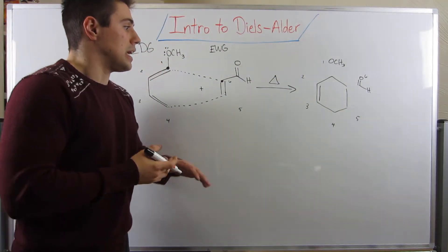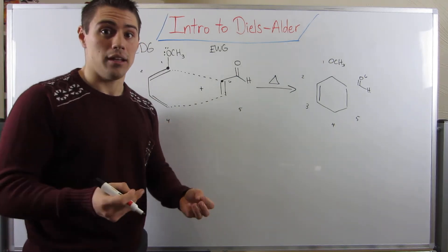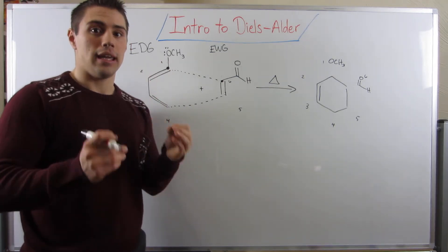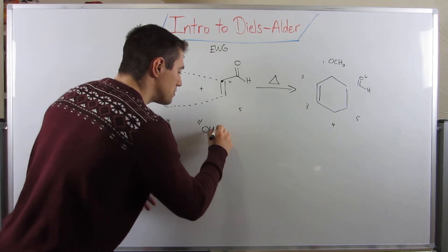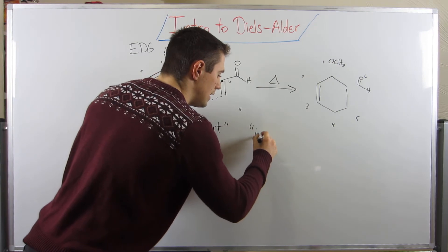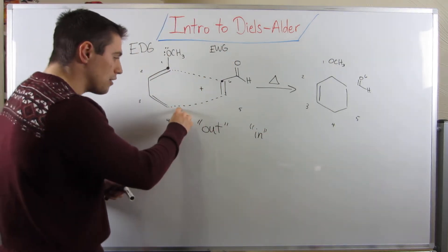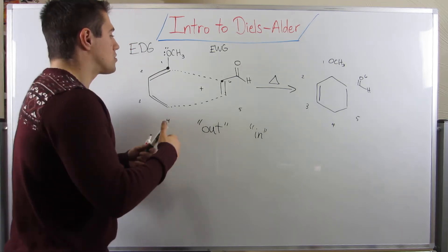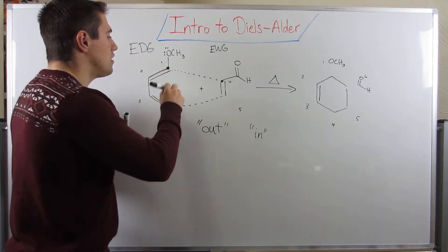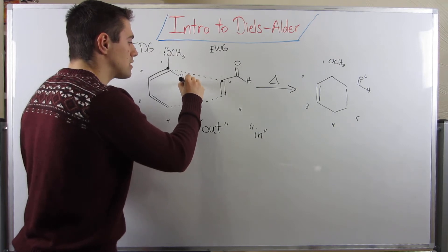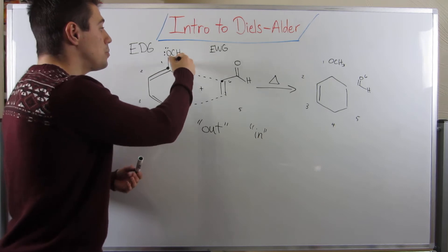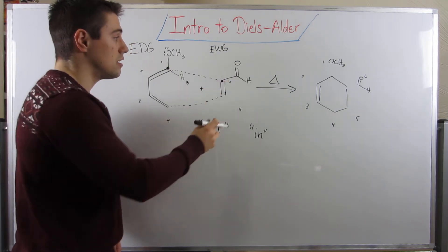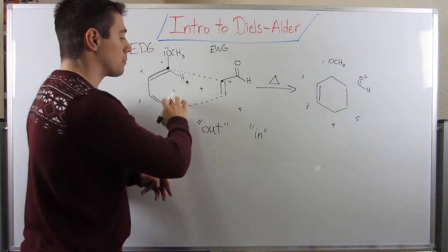Here's the reason why. In Diels-Alder reactions, stereochemistry is a factor - we need to have our groups with either wedges or dashes. There are two types of groups: out-groups and in-groups. This little ring-forming pocket I drew - if you are in the ring-forming pocket, you are considered an in-group. If I drew a hydrogen right here and asterisked him, he would be an in-group. This methoxy group, on the other hand, is an out-group because he's not in this little pocket. The same goes for position six - this aldehyde is not in the ring-forming pocket, so he's an out-group.